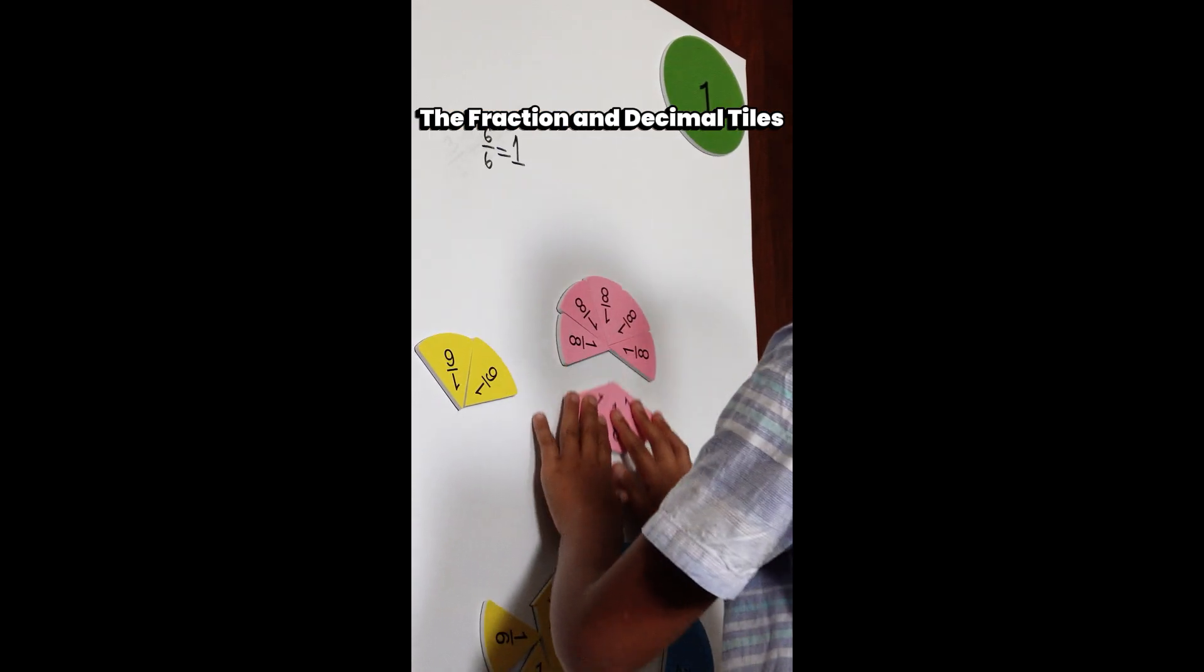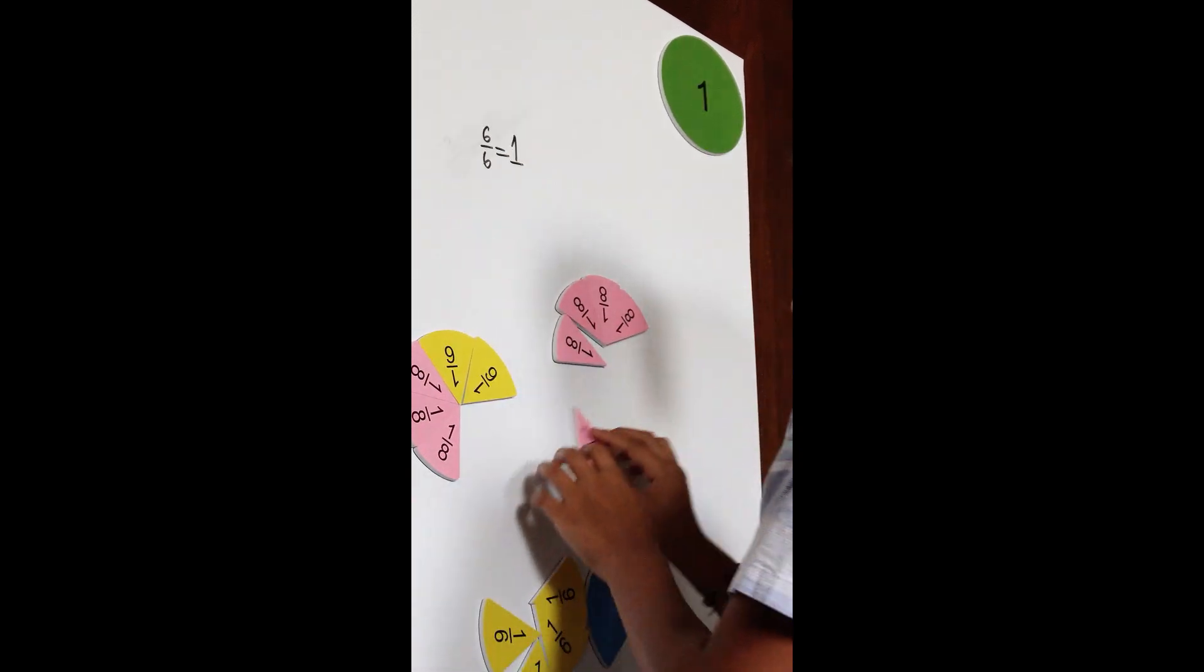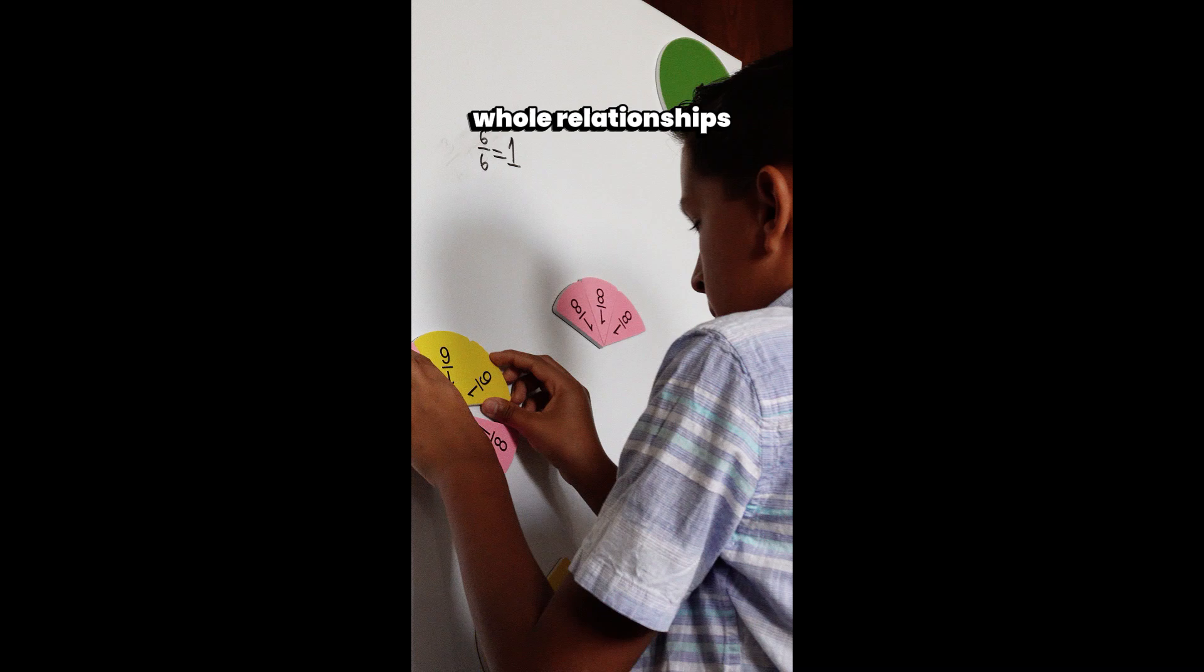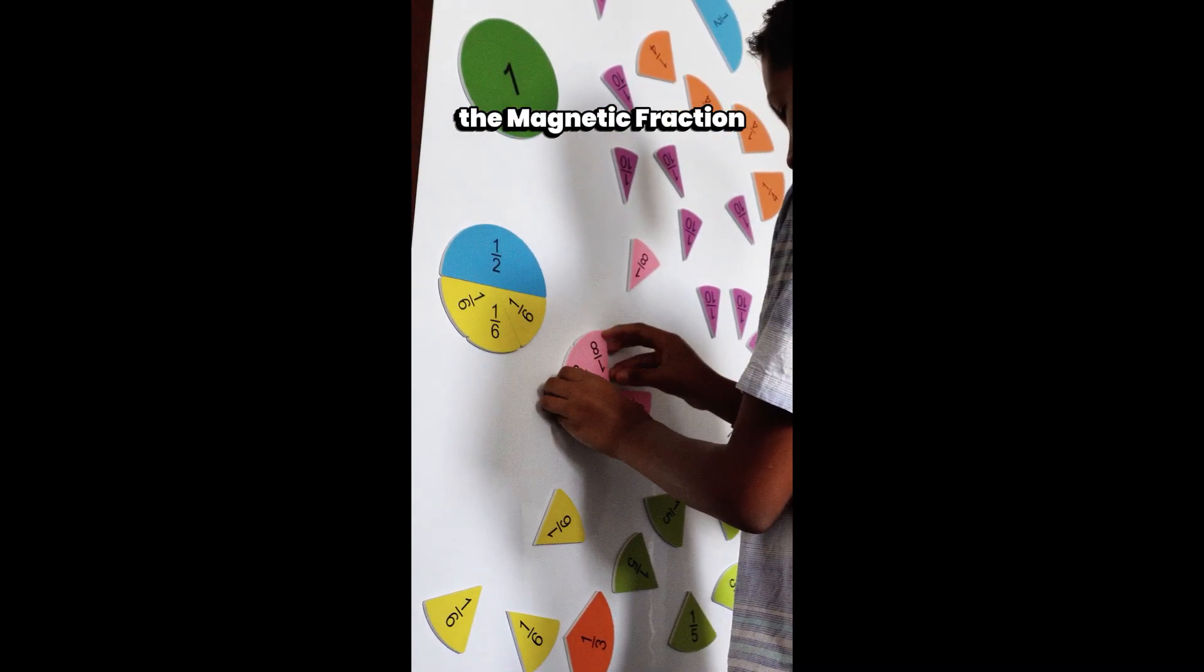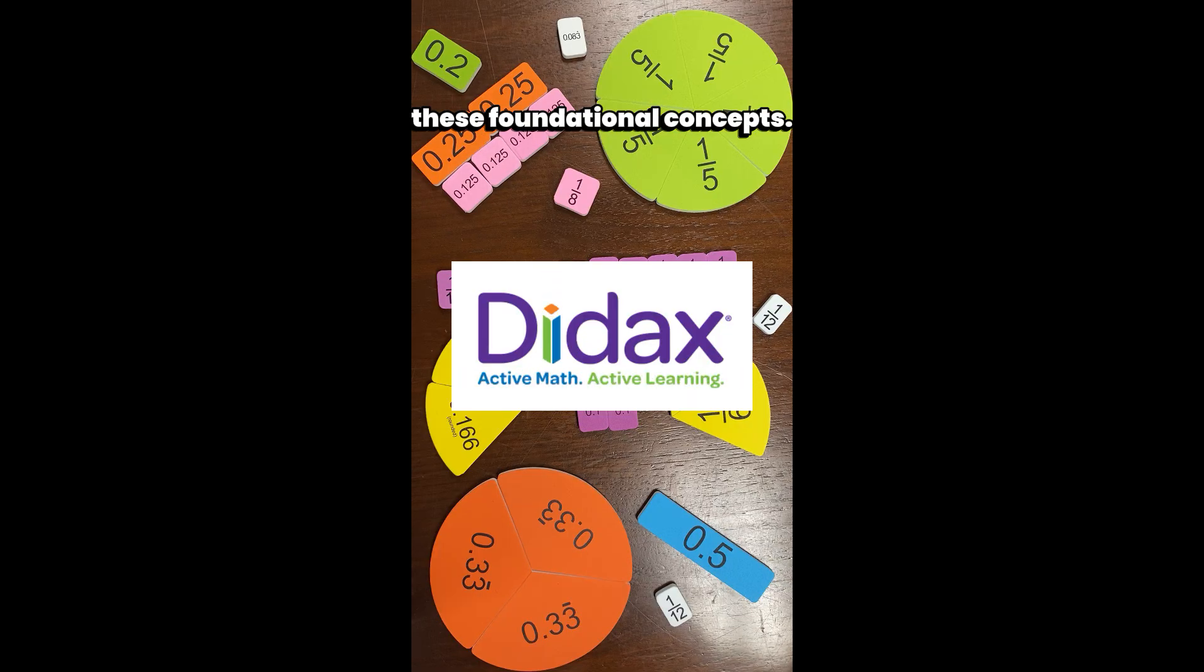The fraction and decimal tiles are also a great way to encourage vertical learning. Whether your students are just beginning to dive into part-whole relationships or they are well on their way to mastering these skills, the magnetic fraction and decimal tiles can play a key role in understanding these foundational concepts.